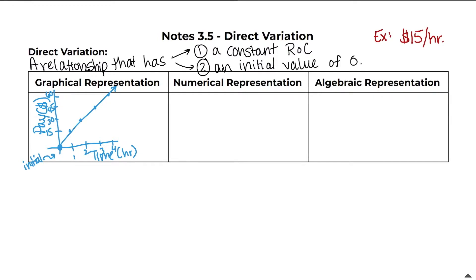A numerical representation would be in a chart. So we would have time, which is measured in hours here. And then we would have our pay, which is measured in dollars. And same thing, initial value. You don't work, you work zero hours, you get paid $0. You work one hour, you get paid $15. You work two hours, you get paid $30.